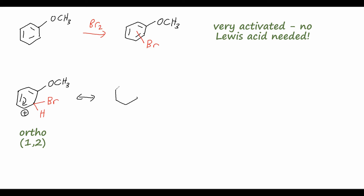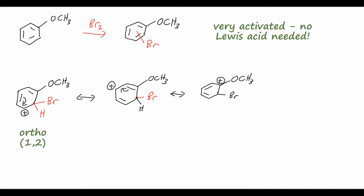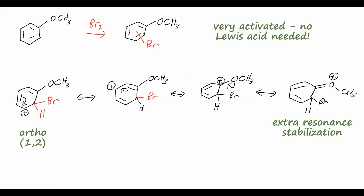We can draw resonance structures by moving the double bonds, placing the positive charge on different carbons in the ring. In one key resonance structure, the positive charge ends up on the carbon to which the methoxy group is bonded. Since oxygen has lone pairs it can donate to the ring, we can swing one of those lone pairs down to capture that positive charge, giving yet another resonance structure where there's a double bond between carbon and oxygen and the positive formal charge is on the oxygen atom. This extra resonance structure shows added stabilization when bromine substitutes at the ortho position.